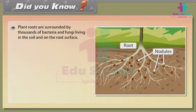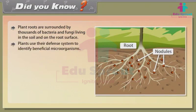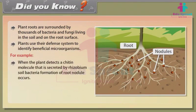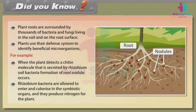Plant roots are surrounded by thousands of bacteria and fungi living in the soil and on the root surface. Plants use their defense system to identify beneficial microorganisms. For example, when a plant detects a chitin molecule secreted by Rhizobium soil bacteria, formation of root nodules occurs. Rhizobium bacteria are allowed to enter and colonize in the symbiotic organs, and they produce nitrogen for the plant.